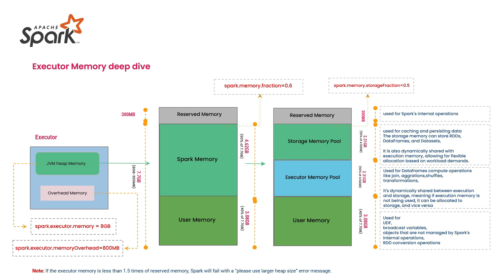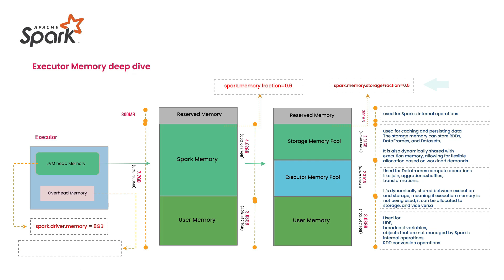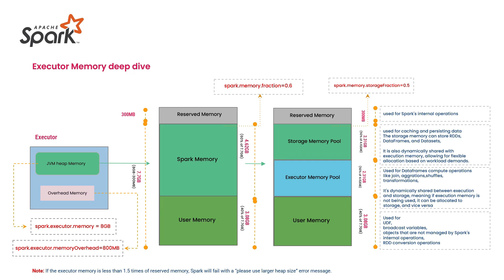In day-to-day work, if a job fails with an out-of-memory exception, there are several reasons: shortage of overhead memory, shortage of storage pool, shortage of executor pool, or shortage of user memory. Now you can understand the configuration spark.memory.storageFraction, which defaults to 0.5 — meaning Storage Memory Pool and Executor Memory Pool each get 50% of Spark Memory by default, but this is also configurable.